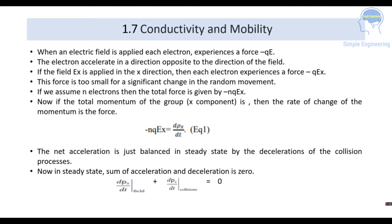Taking the total momentum of the group, the rate of change of momentum is the force, so: minus nqE_x = dρ_x/dt. The net acceleration is balanced in steady state by the deceleration of collision processes, so the sum of acceleration and deceleration equals 0: dp_x/dt (field) + dp_x/dt (collisions) = 0.